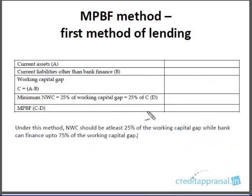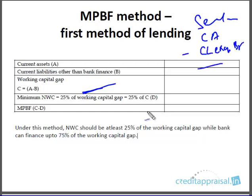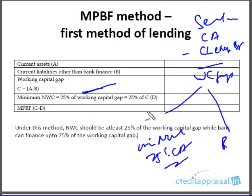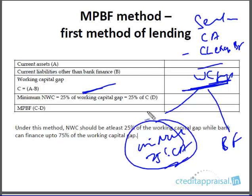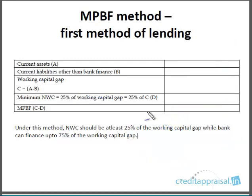Now the first method of lending — not a very popular method, more of academic interest. In the MPBF first method, you take current assets less current liabilities other than bank finance to get the working capital gap — same as the second method up to this point. But instead of 25% of current assets as minimum NWC, here straight away we take 25% of working capital gap as the borrower's margin, and the balance is bank finance.